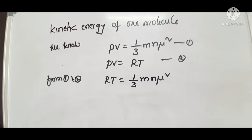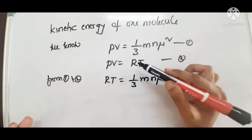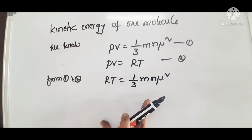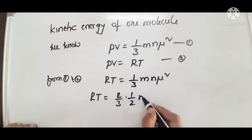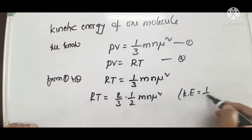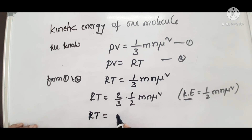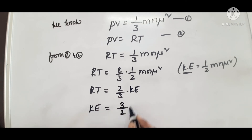Now let's find the kinetic energy of one molecule. We have PV equals 1 by 3 Mn mu squared, and PV equals RT from the ideal gas equation. Comparing these two equations, RT equals 1 by 3 Mn mu squared. Rearranging, RT equals 2 by 3 into (1 by 2 Mn mu squared). Kinetic energy of gas per mole equals half Mn C squared or mu squared. Substituting, kinetic energy equals 3 by 2 RT.